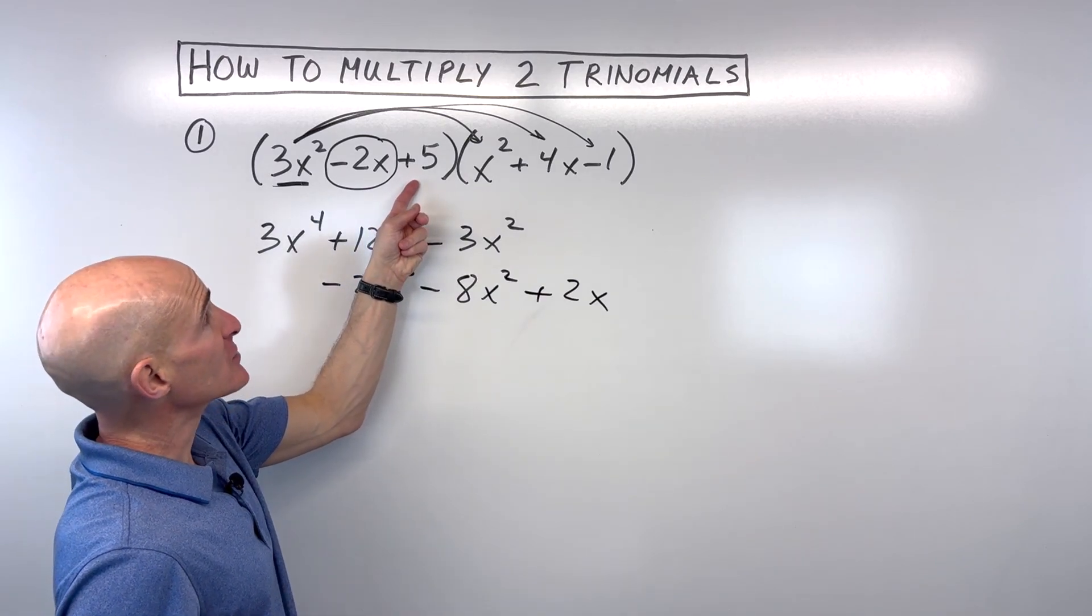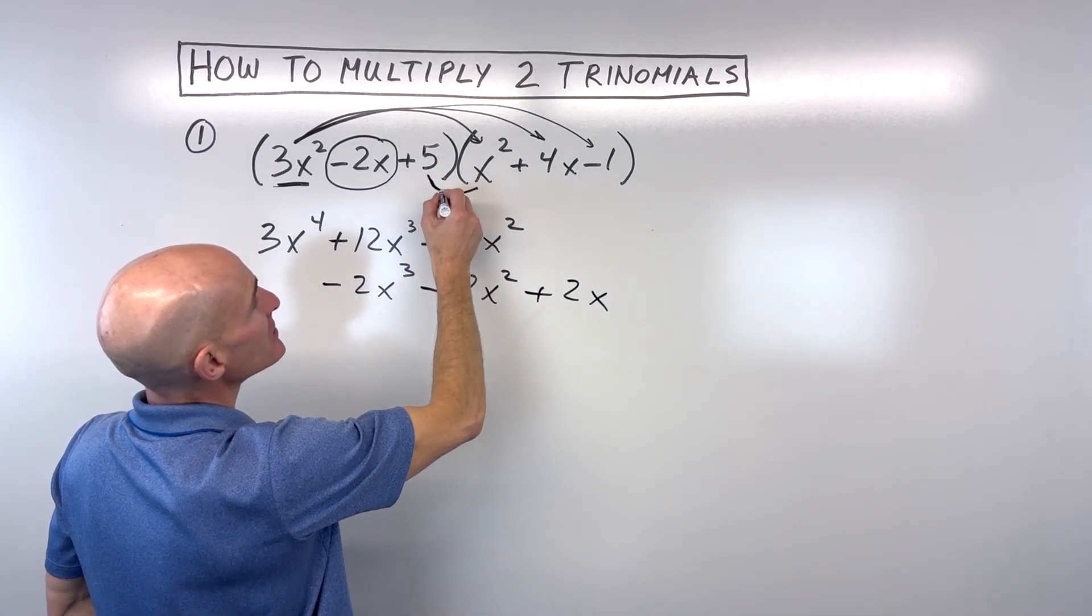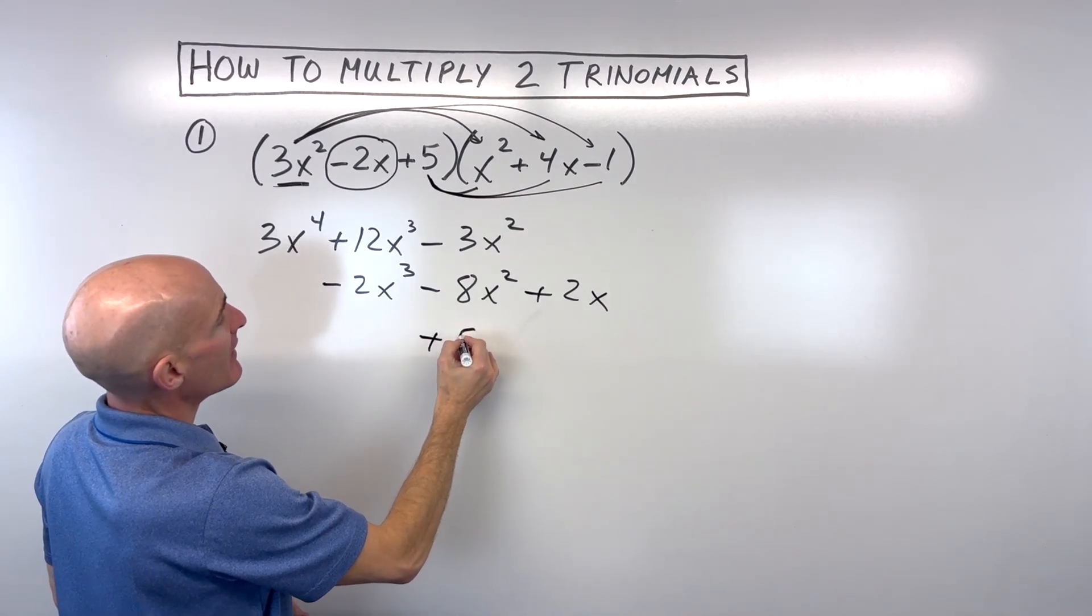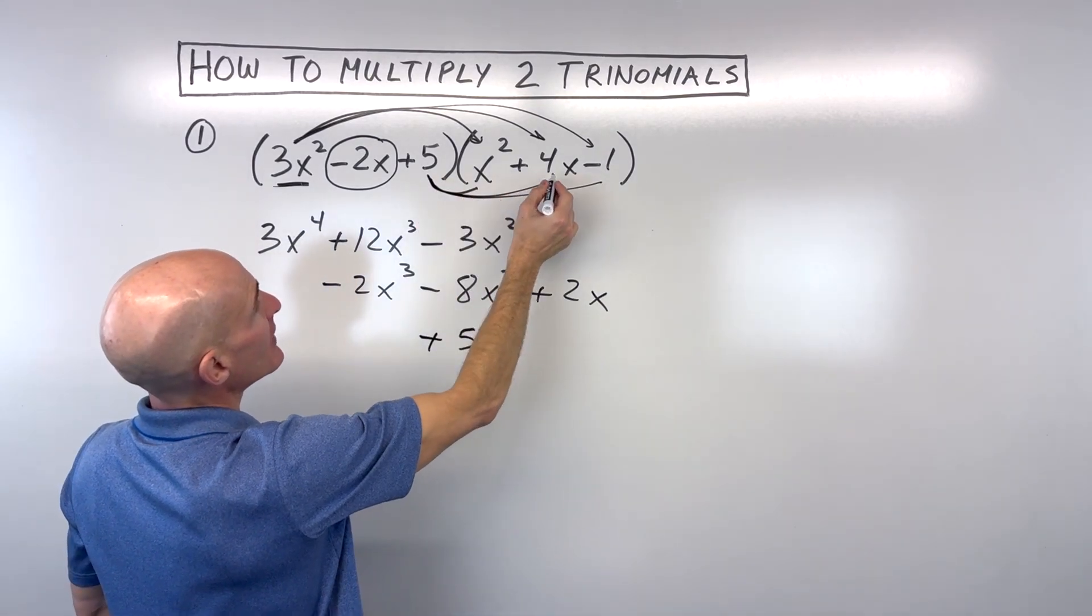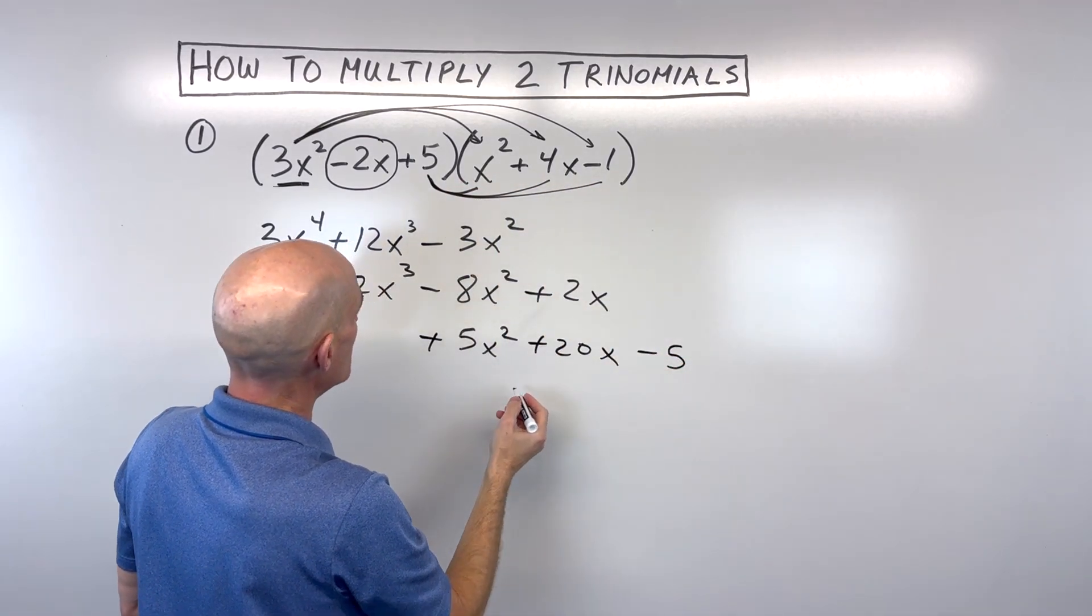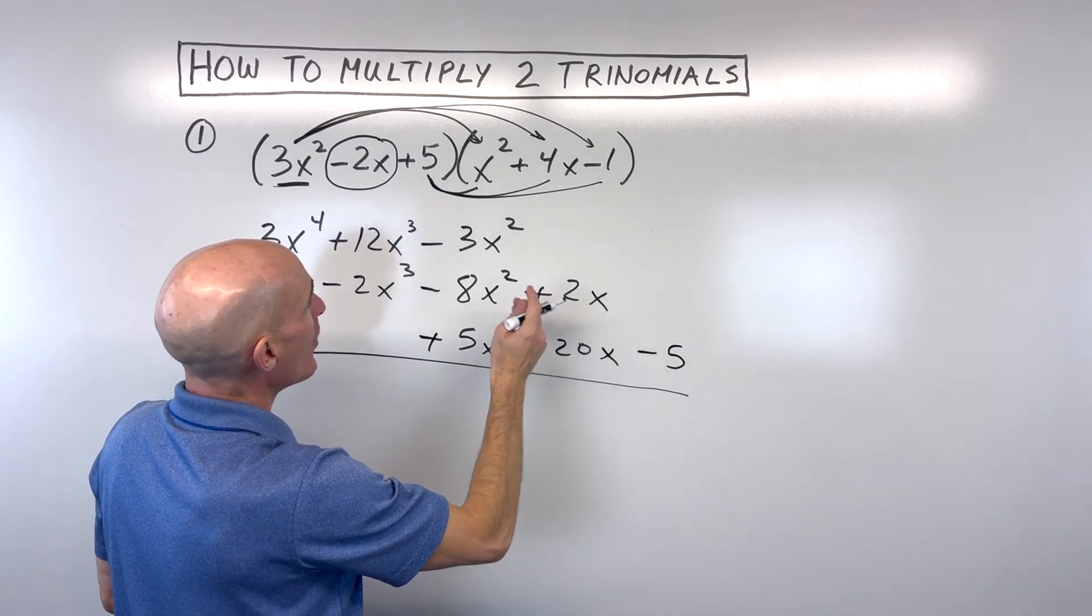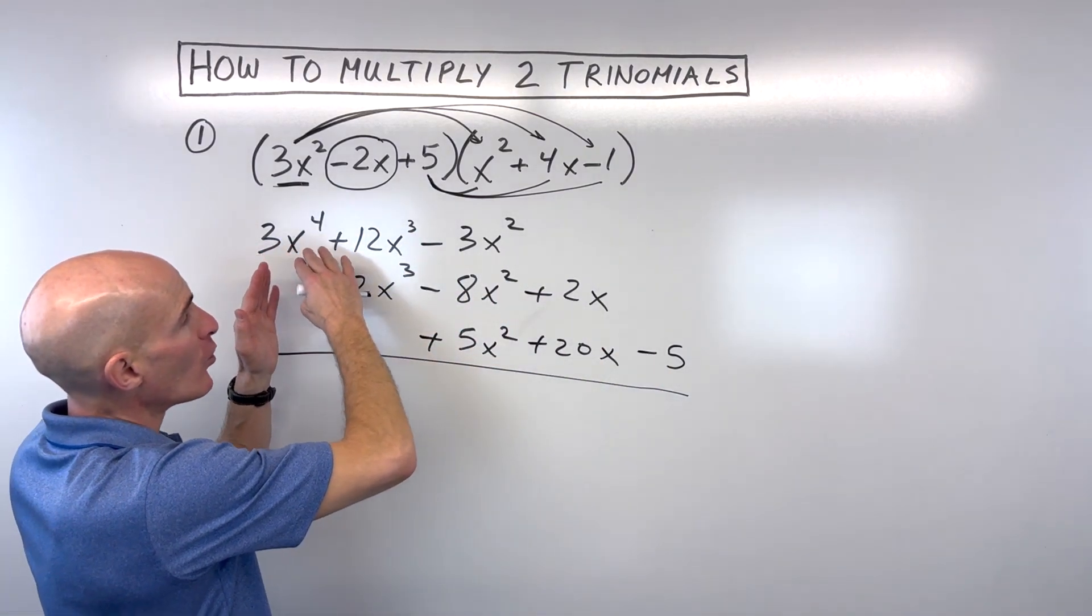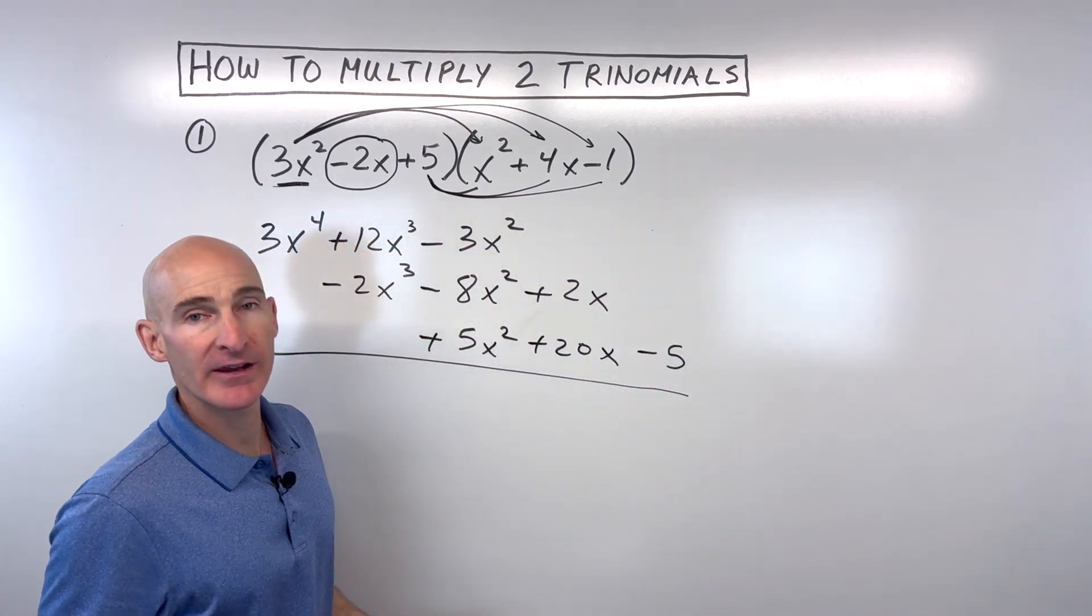Now we're going to go to positive 5, and we're going to distribute that to all three terms. So 5 times x squared is 5x squared. 5 times 4x is 20x. And 5 times negative 1 is negative 5. Now you might be saying, Mario, why did you line them up like this? Well, you can just put them in one long row if you want, and then combine like terms. That's completely fine.